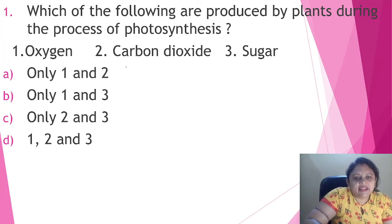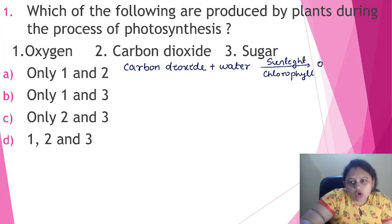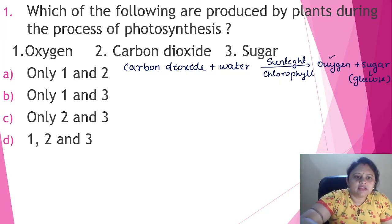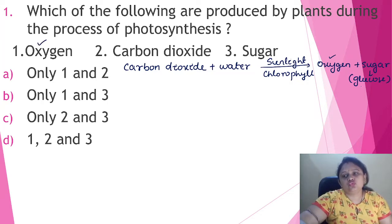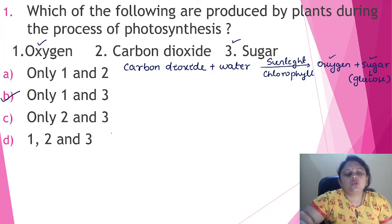How do they prepare it? They take carbon dioxide from the atmosphere and water from the soil, and in the presence of sunlight and a green pigment named chlorophyll, they produce oxygen and sugar. That sugar which is formed is particularly glucose. So what is produced is oxygen (option 1) and glucose which is a sugar (option 3). The correct answer is option B, that is only 1 and 3.